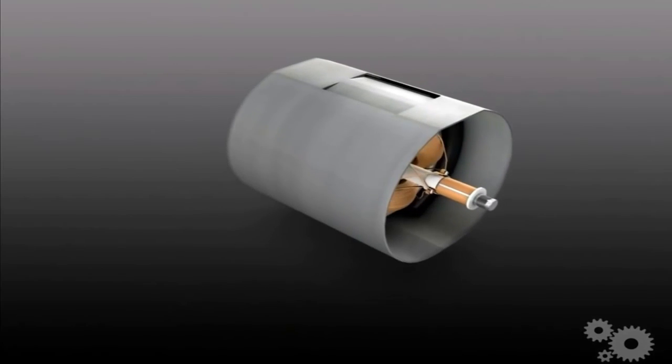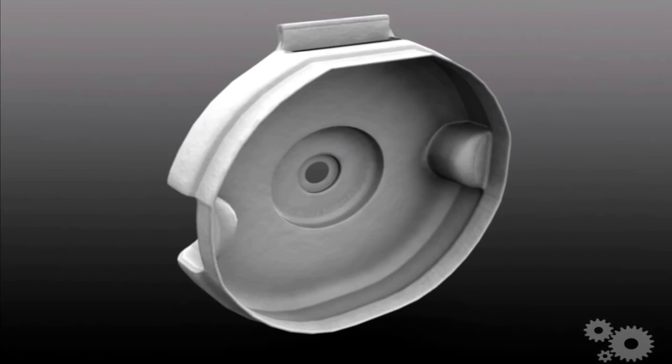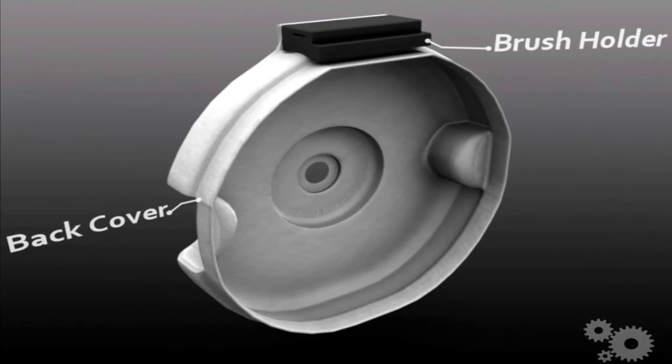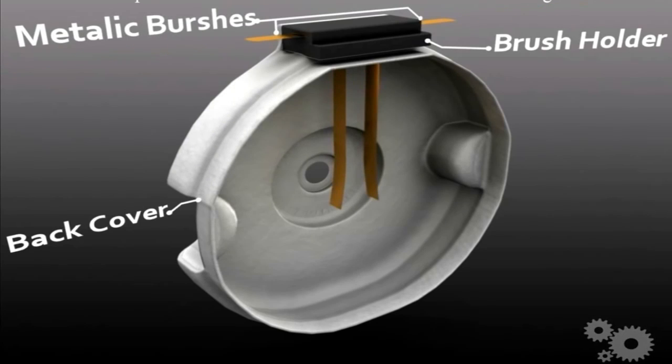Another cover is fitted on back side which is known as back cover. The back cover consists of brush holder and brushes. These brushes are made up of copper for small DC machines and for large DC machines they are made up of carbon.